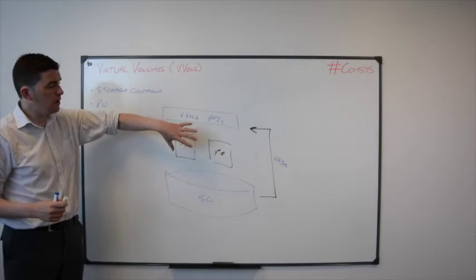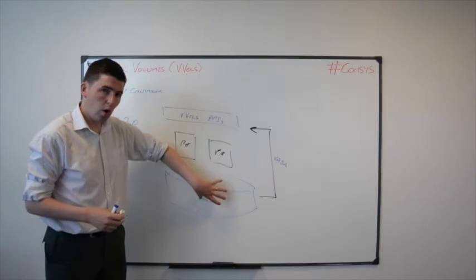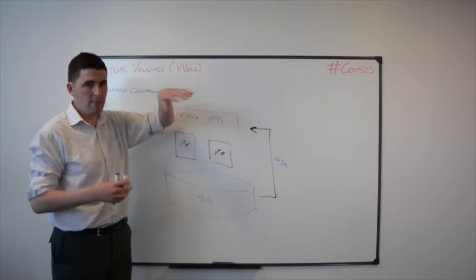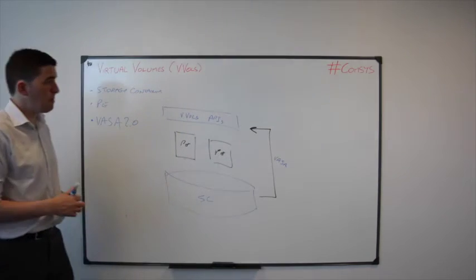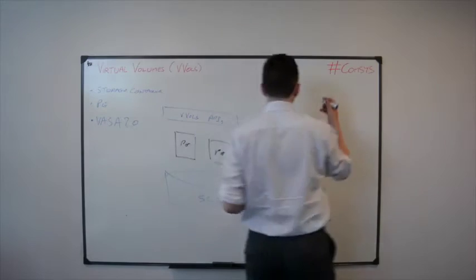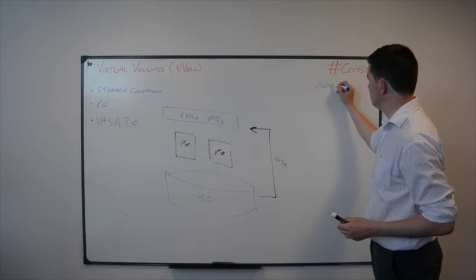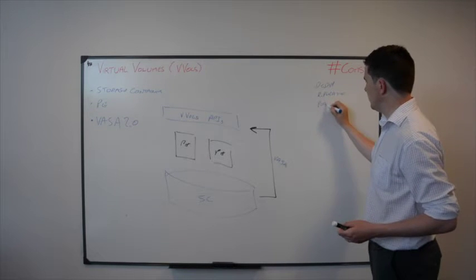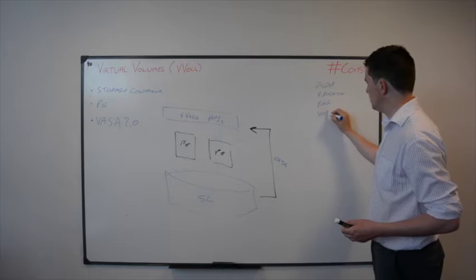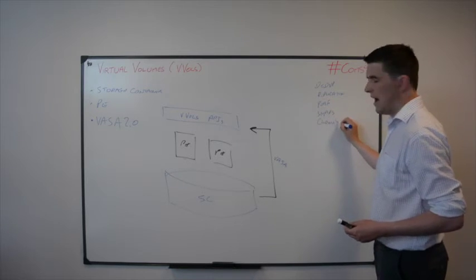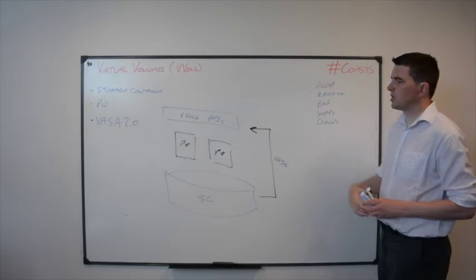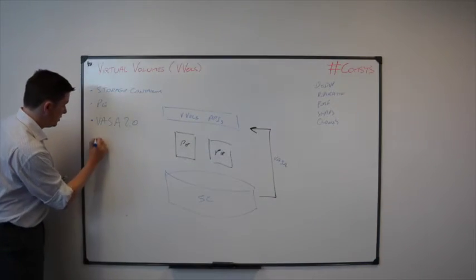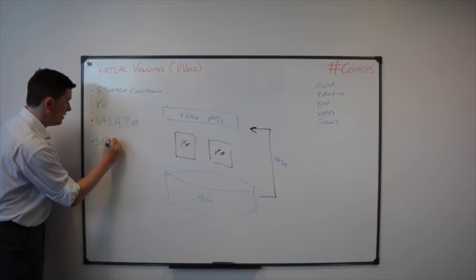And this is out of band. And the point of this is now the array can start telling vSphere the actual capabilities that it has. Capabilities such as dedupe, replication, performance characteristics, snapshots, clones, and so on. And this information can all be fed back. And then that brings us to our last, our final point here, which is storage policy based management.